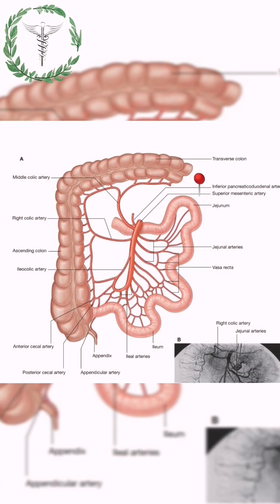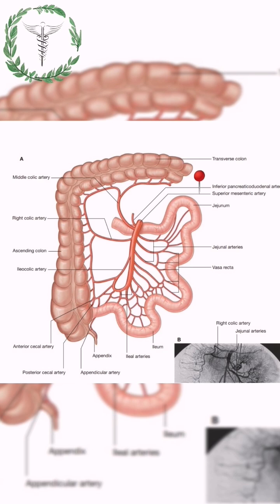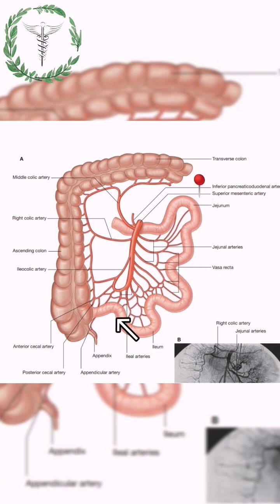The ileocolic artery has a superior branch which anastomoses with the right colic artery, and an inferior branch which forms the anterior as well as the posterior cecal arteries. Keep in mind that the posterior cecal artery also branches to give the appendicular artery. The last branches are the jejunal and ileal branches, which supply the jejunum as well as the ileum.